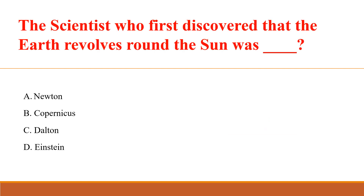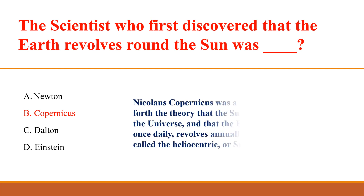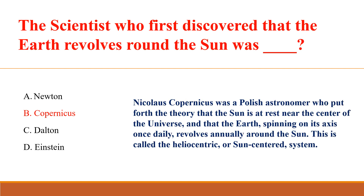The scientist who first discovered that the earth revolved around the sun was? Answer: B. Copernicus. Nicholas Copernicus was a Polish astronomer who put forth the theory that the sun is at rest near the center of the universe, and that the earth spins on its axis once daily and revolves around the sun. This is called the heliocentric, or sun-centered, system.